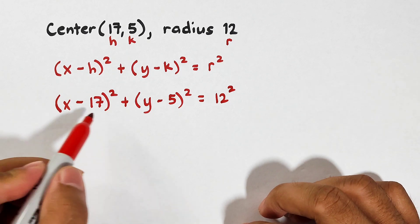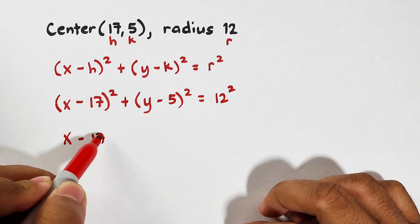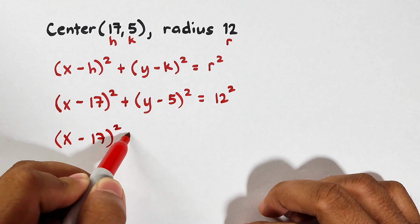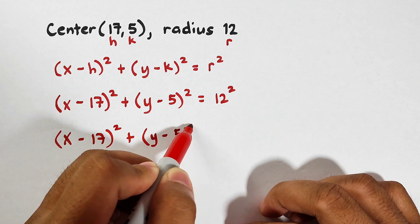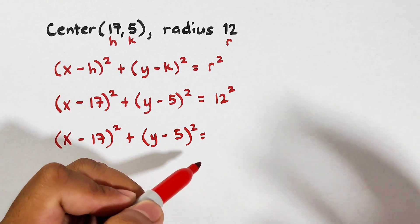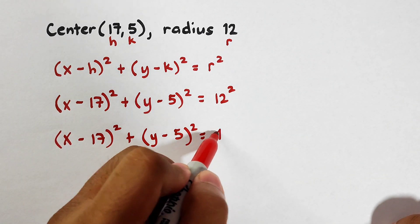Now, what will happen? Copy this one. x minus 17 squared plus y minus 5 squared. And what is 12 squared? 12 squared is 144.